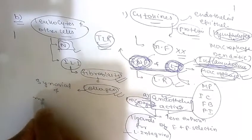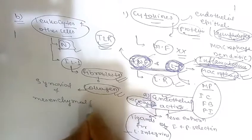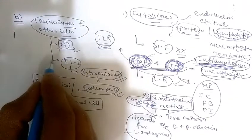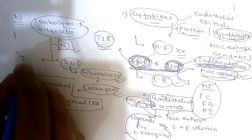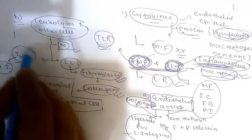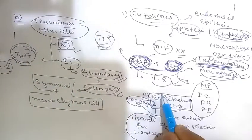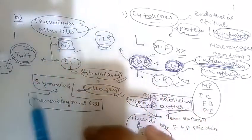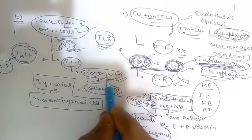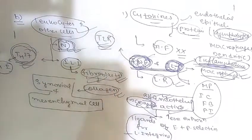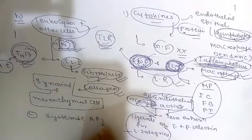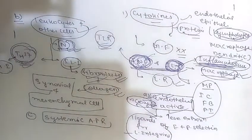IL-1 also induces a TH17 response, which in turn induces acute inflammation. So in summary: endothelial activation is first; second is leukocyte and other cell activation, where TNF augments neutrophil responses, and IL-1 has two functions — fibroblast induction and TH17 induction.